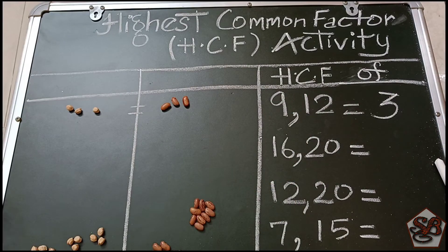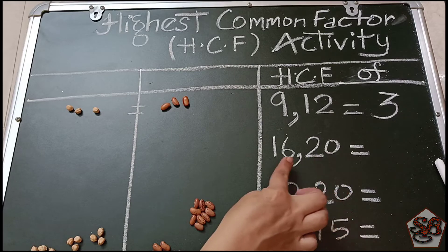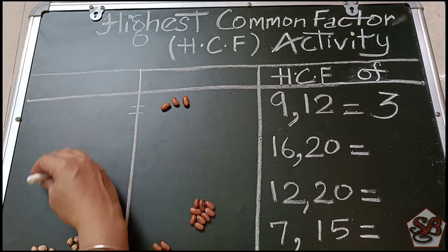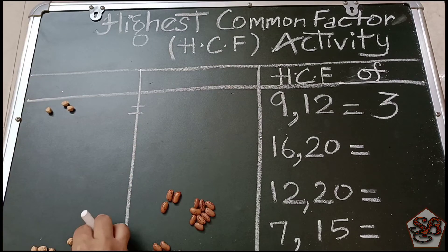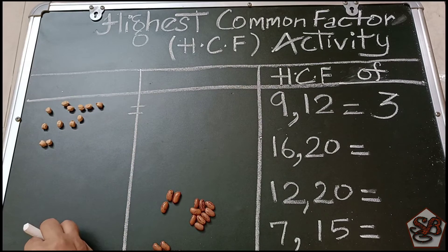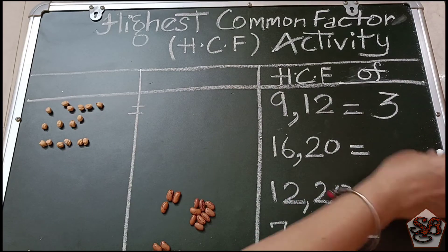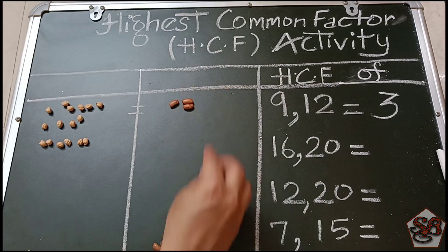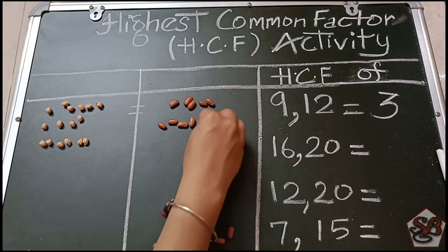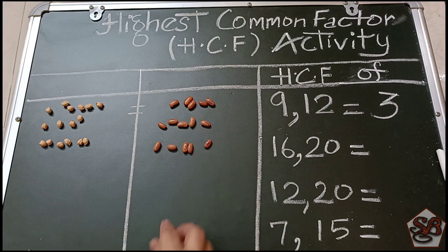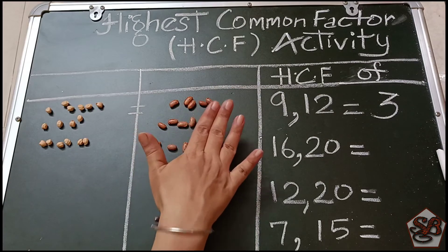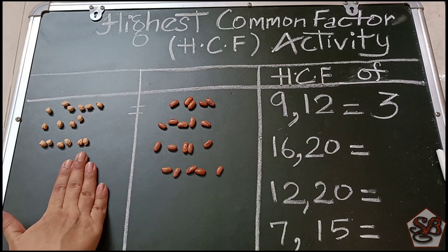Let's take another example. Now we have to find the highest common factor of 16 and 20. We take 16 chana seeds: 1, 2, 3, 4, 5, 6, 7, 8, 9, 10, 11, 12, 13, 14, 15, and 16. And for 20, let's make groups of 5 to make our calculations quicker — 5, 10, 15, and 20. So here we have 20 rajma seeds and 16 chana seeds.